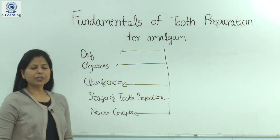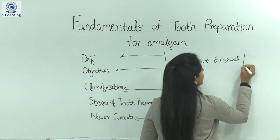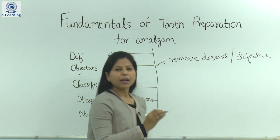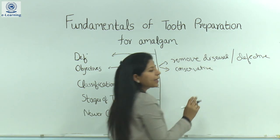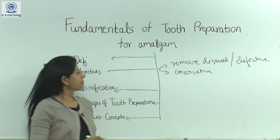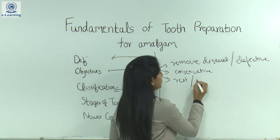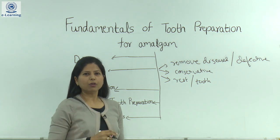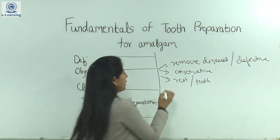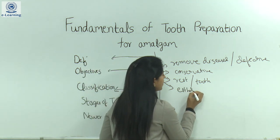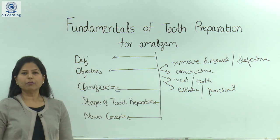Coming to the objectives of tooth preparation. The first objective is to remove all the diseased and defective tissue, and at the same time provide protection to the pulp. Next is conservative extension of the cavity — the cavity should be extended as minimally as possible to conserve the tooth structure. Next, the tooth preparation should be such that both the restoration and the tooth do not fracture under the load of mastication or occlusal forces. Moreover, the restoration should not get dislodged due to tipping or lifting forces. The last objective is to allow for aesthetic as well as functional placement of the restorative material.